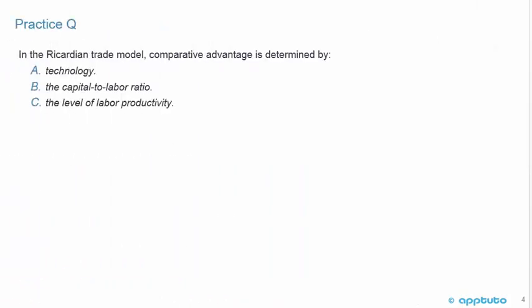A quick practice question to check our understanding. In the Ricardian trade model, comparative advantage is determined by: A, technology; B, the capital-to-labor ratio; or C, the level of labor productivity.